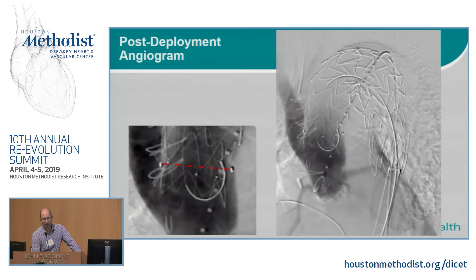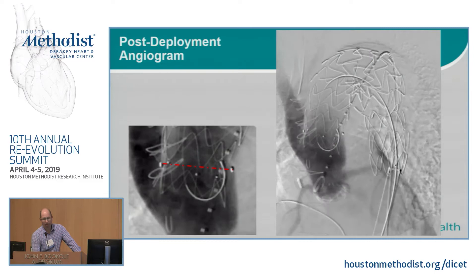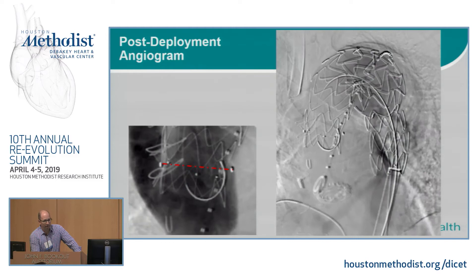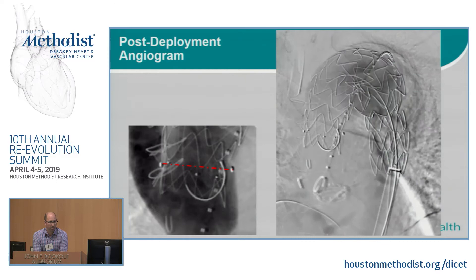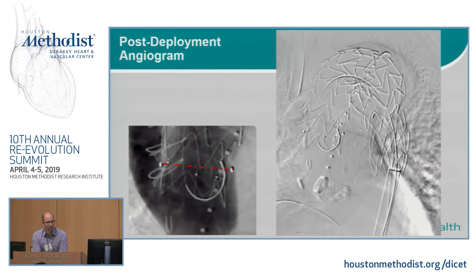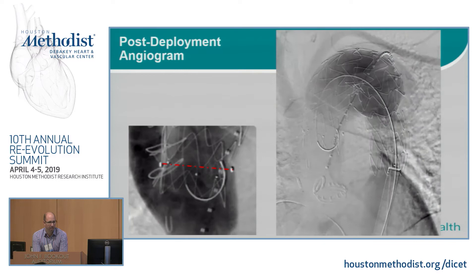So in this case, we just hubbed a Lunderquist down onto that mechanical valve, rapid-paced, and hoped for the best. We got the graft up and over. This is also a Navion device — a little more trackable, more flexible, and low profile. We landed that right at the takeoff of the branch graft and got a nice angiographic result proximally. We had true lumen access via IVUS, so the distal part of this graft is in the true lumen.